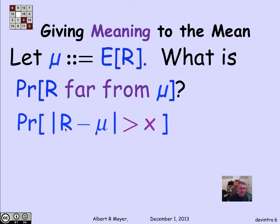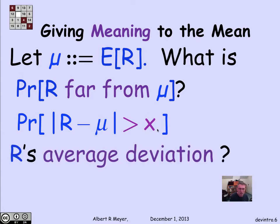What's the probability that the random variable is far from its mean μ? You could phrase that as, what's the probability that the distance from R to μ, the absolute value of R minus μ, is greater than some amount x? And the second question is, what's the average deviation? What's the expectation of the distance between R and μ?